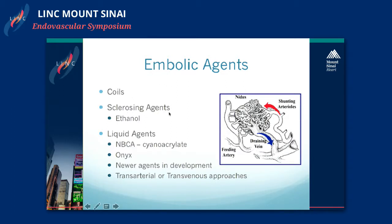The more common use is liquid agents. There are really two that are in use in the U.S. right now: NBCA, which is a cyanoacrylate, and Onyx, which is a polymer. There are also some newer agents in development. These can be placed into the nidus or into the vein via a transarterial or a transvenous approach.